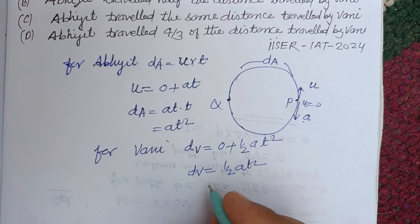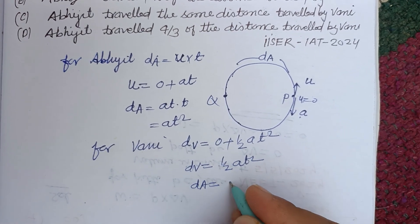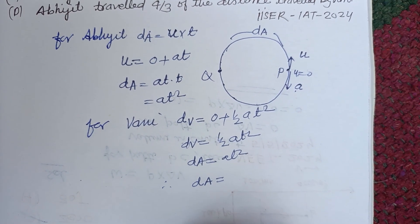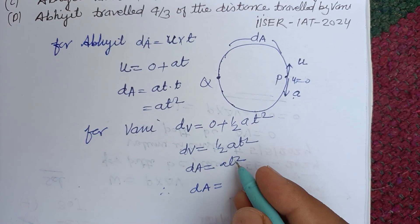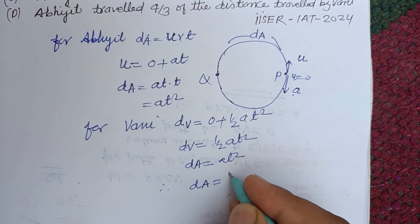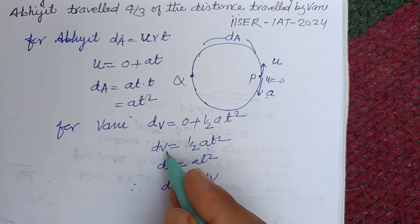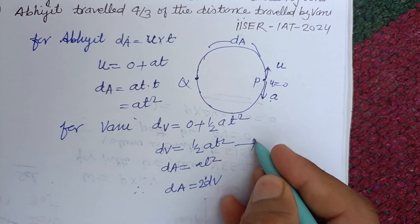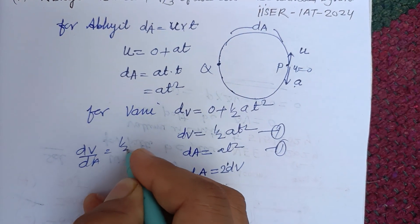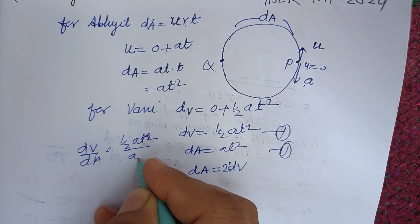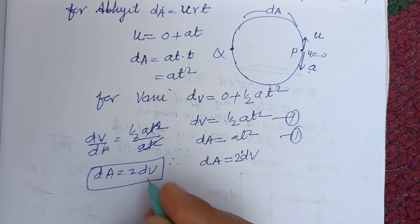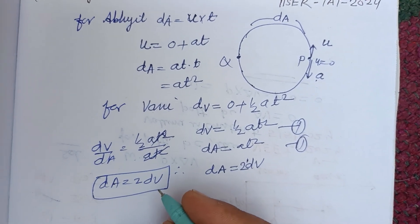The distance covered by Avjit is d_A equals u·t equals a·t, and d_V equals half·a·t². Therefore d_A equals 2 times d_V. The distance covered by Avjit is 2 times the distance covered by Vani.